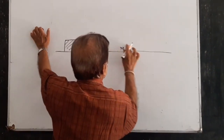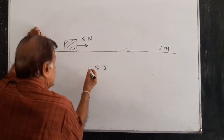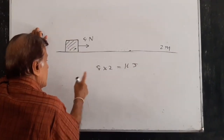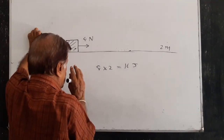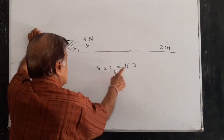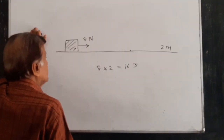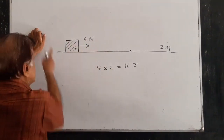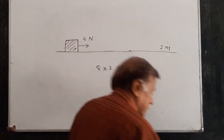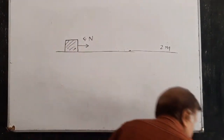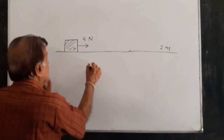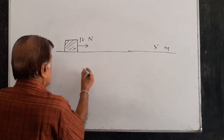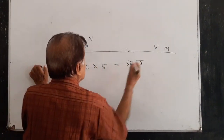If you are pushing this to a distance of say 2 meters, then it will be 8 multiplied by 2, which is 16 Joules. Now, 60 Joules is the amount of work done when you multiply the force by the distance moved — you will get the work done, 60 Joules. If this is 10 Newtons and the distance is 5 meters, then 10 multiplied by 5 is 50 Joules.